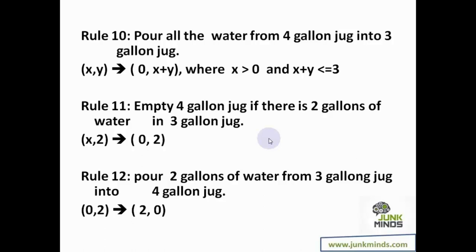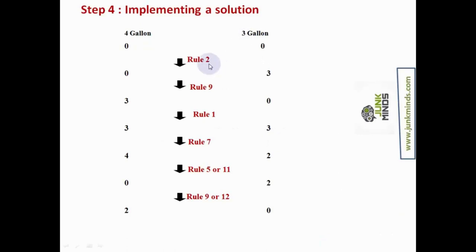We've now given all the production rules — all the information needed for solving this problem. The system will use these rules to generate the solution. It starts at the initial state, applies rule 2, then rule 9, then rule 1, rule 7, and so on, eventually reaching the goal. You can use any rule any number of times and in any sequence. That is how the water jug problem is implemented.